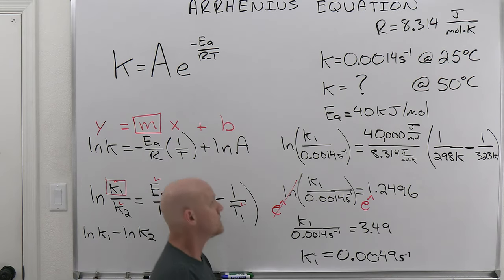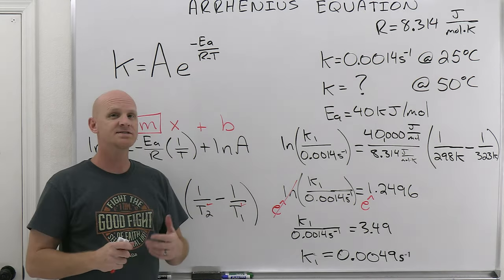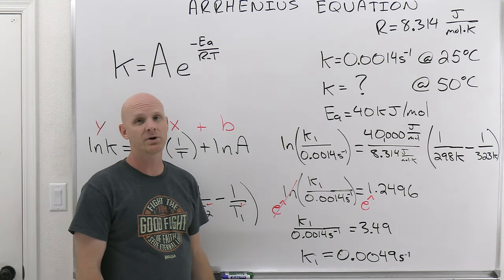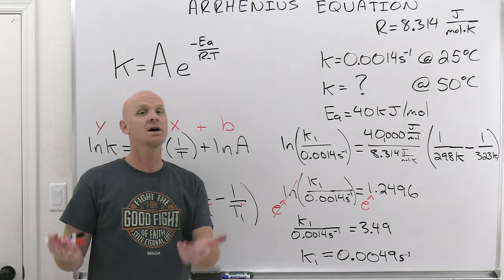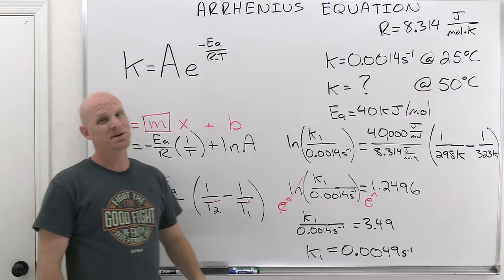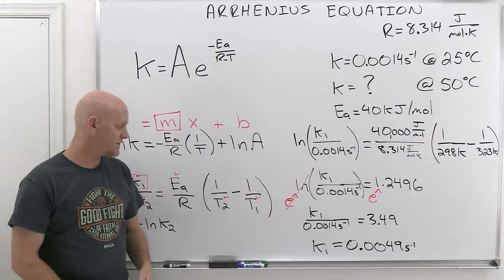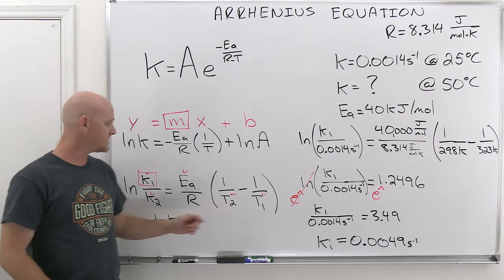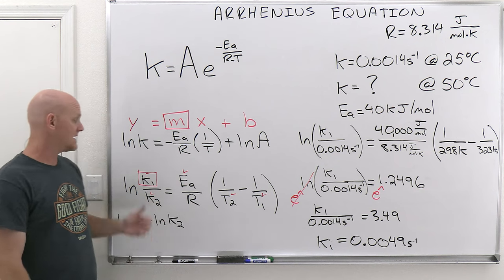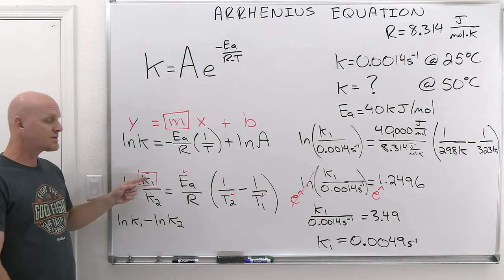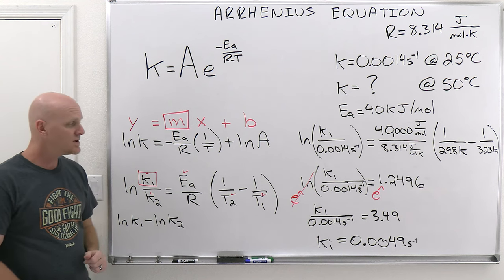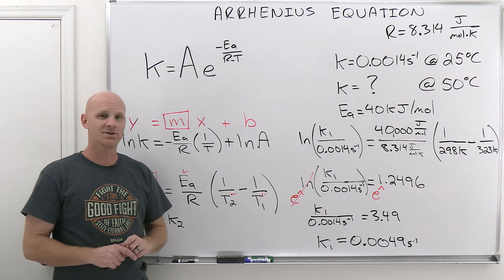By going from 25°C to 50°C, the k value got bigger — roughly three and a half times bigger — confirming that higher temperature gives a higher rate constant. Remember the key pitfalls: make sure temperatures are in Kelvin, make sure activation energy and R are in the same units, and if solving for something under a natural log, use the exponential to cancel it.